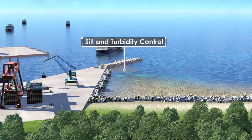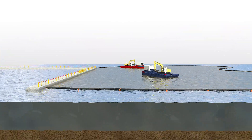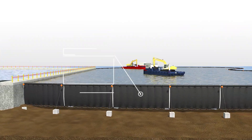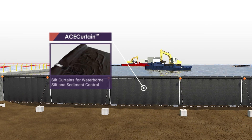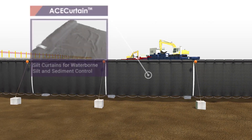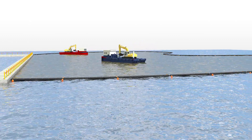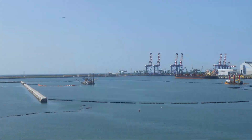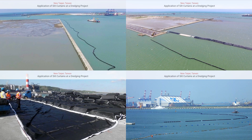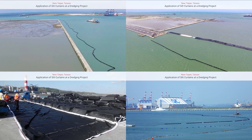Silt and Turbidity Control: ACE Curtain Silt Curtain is made up of ACE-TEX geotextile, floats and anchoring systems, providing excellent filtration capability and durability. It is easy to install and can be customized according to customer need. It can control sludge, suspended or drifting matter in a designated area to protect water quality in the body of water.